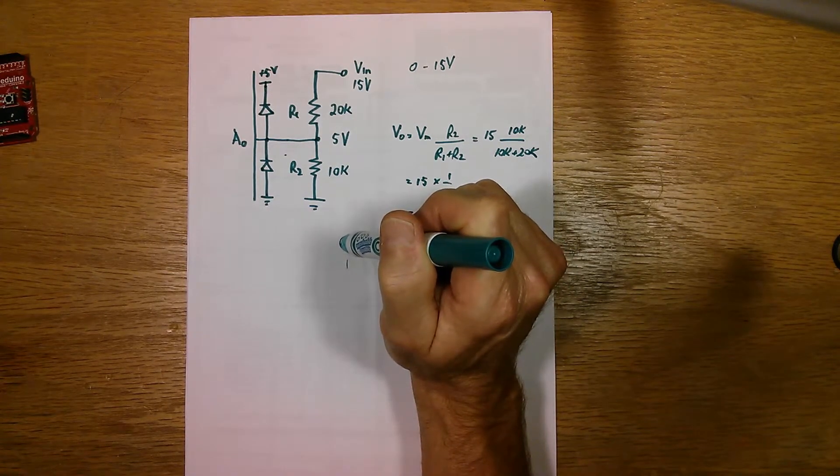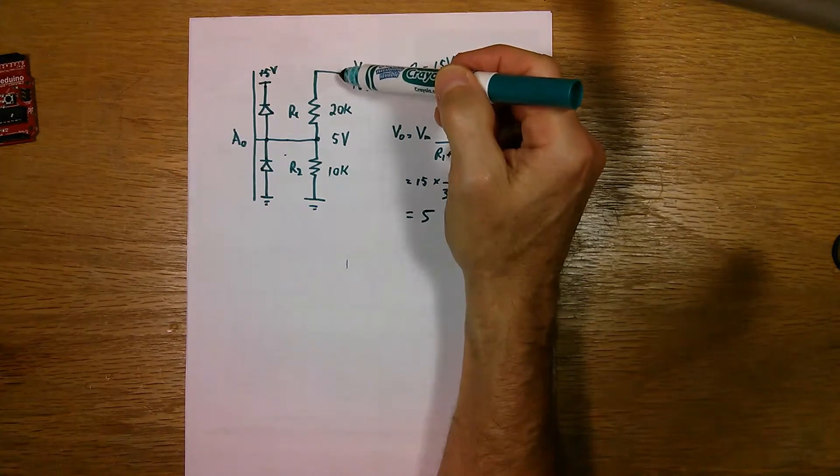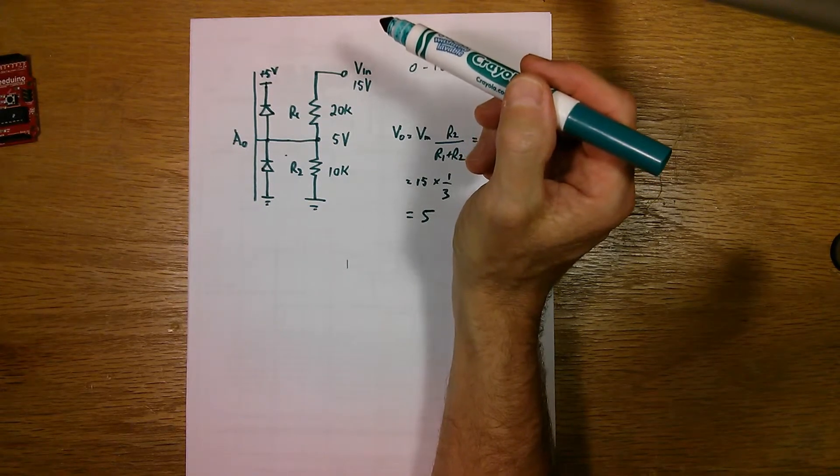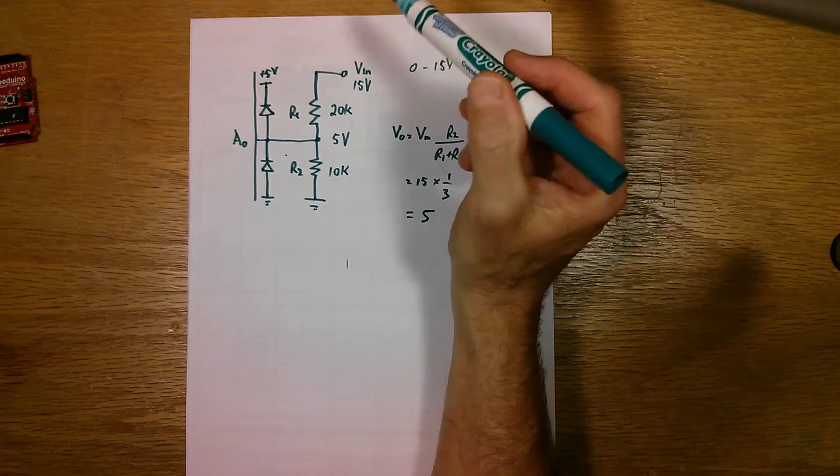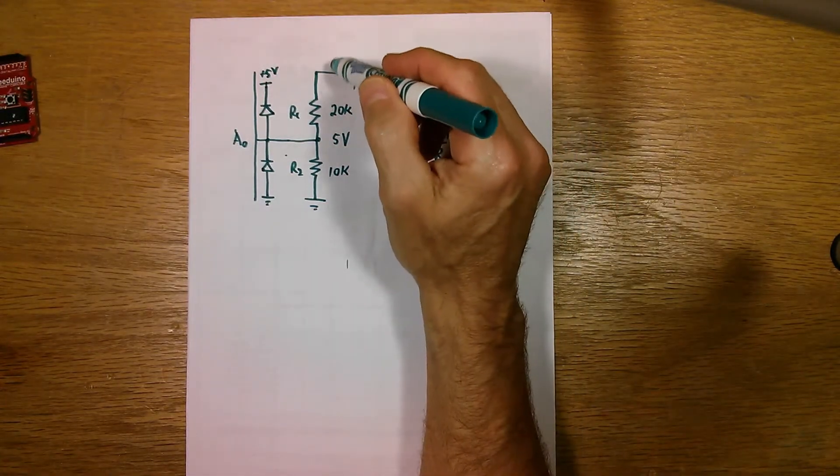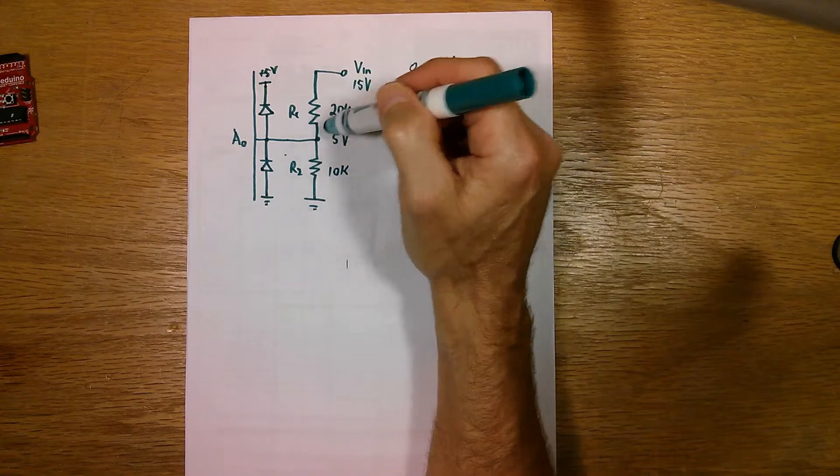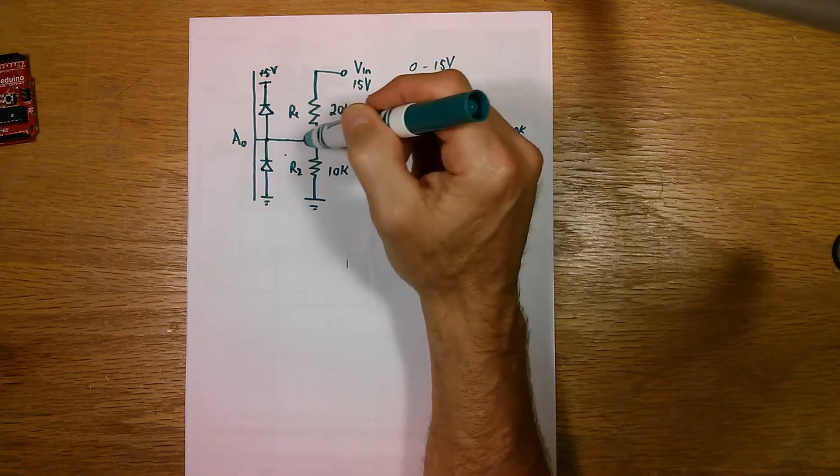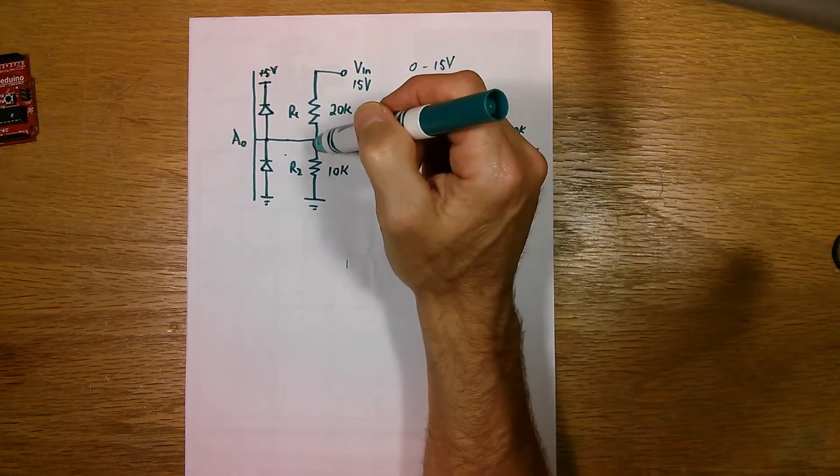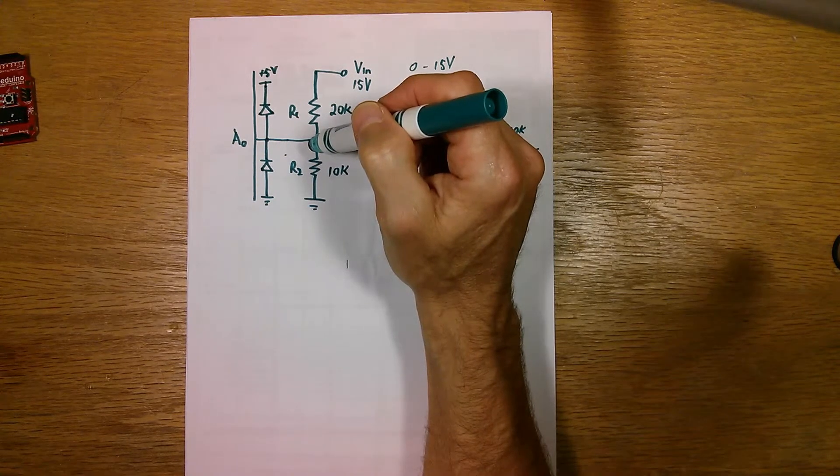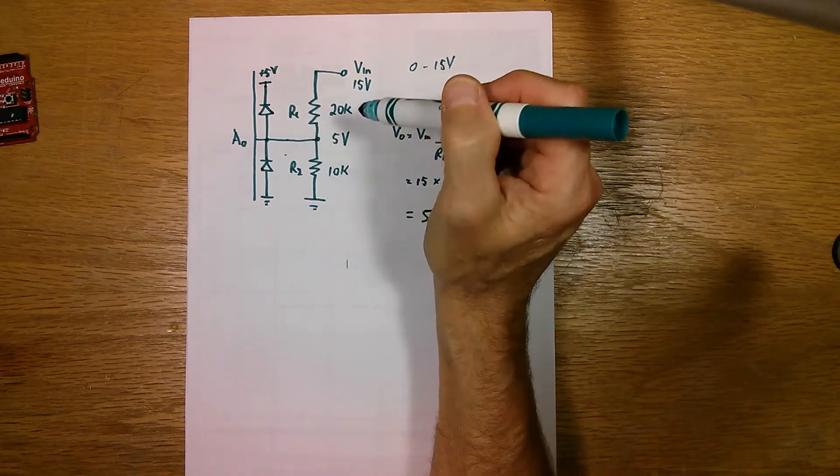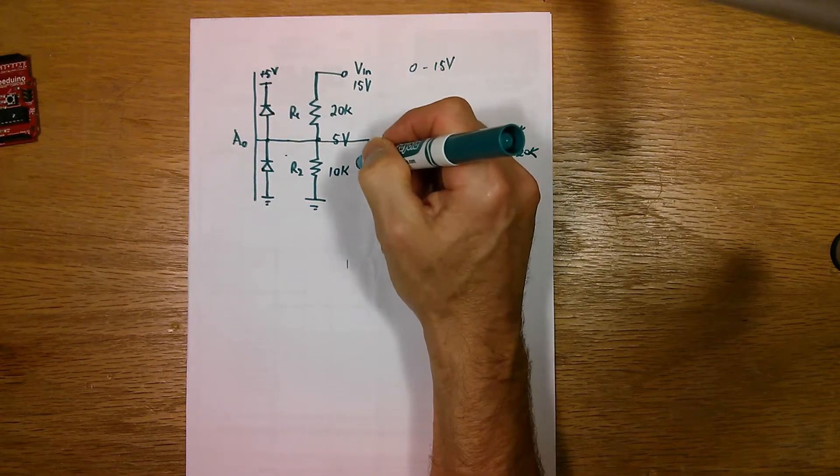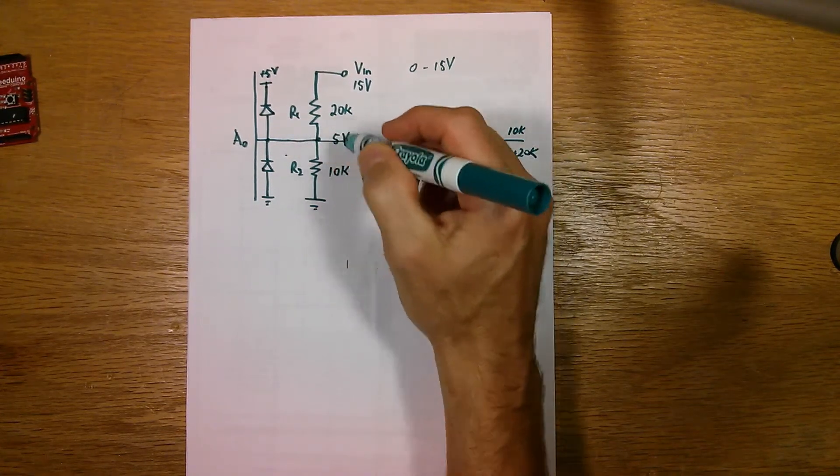Now, one other thing that you might need to do is this pin here is sitting out here in the real world and it's picking up noise from all the electromagnetic interference from around in your room from your TV or your computer or whatever. And so there's some noise getting on this pin and it'll look like a voltage here that'll make this voltage here go up and down quite a bit. And it'll get digitized by the analog to digital converter and you'll see your digital voltage readings bouncing up and down a little bit. So you might want to try to filter that out.